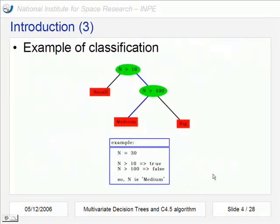A simple example: just one attribute and two tests. Here are the leaves that we call the classes, and here are the nodes that contain tests connected to two or more nodes. In this example, N is 30. 30 is higher than 10, N is not higher than 100, so it comes to this side and it's classified as median.